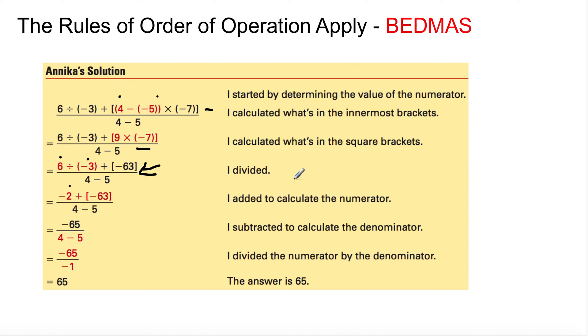Everything in red is what's happening here. Then I added to calculate the numerator. So you have negative 2 plus negative 63. As we were talking in class before, you're moving on the number line. If you are adding two negative numbers, it's like you're working to the left. You're going left on the number line, and it gives you negative 65.